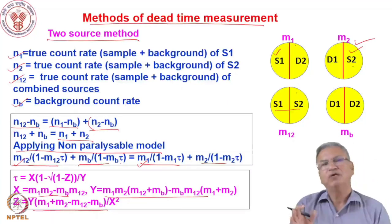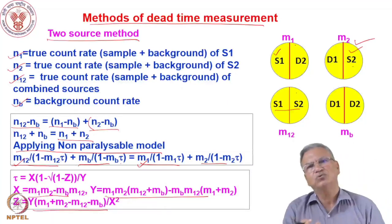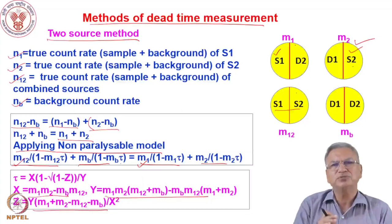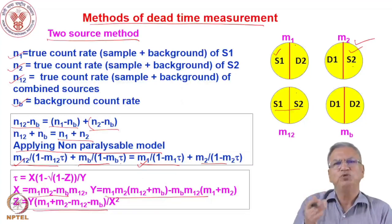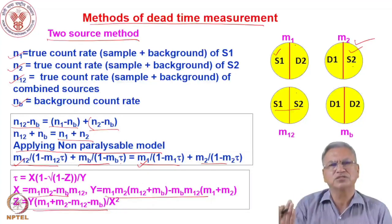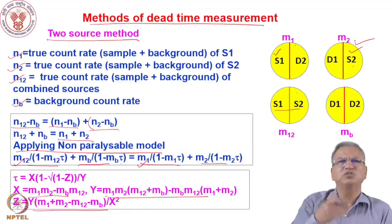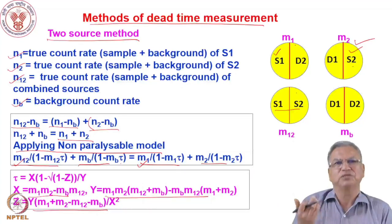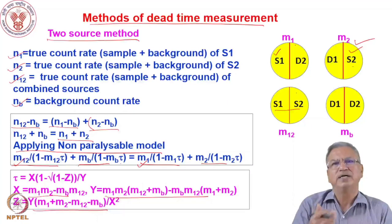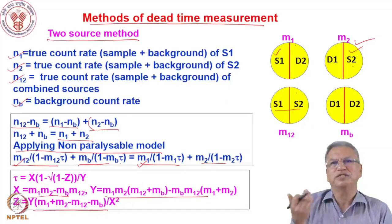Today I tried to show you the different properties of the detector systems — counting curves, energy resolution, detection efficiency, counting statistics, and dead time. These properties will be used when we discuss different detectors. Next time we will discuss the different types of detectors. Thank you very much.